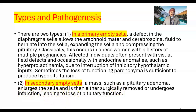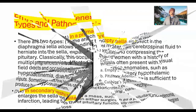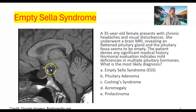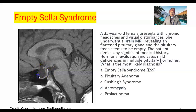We are looking at an MRI image taken from Radiopedia.org. This is the empty sella. This is the sphenoidal sinus. This is the sphenoid bone. And this is the empty sella.